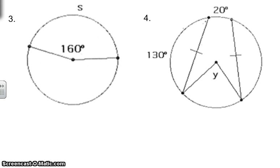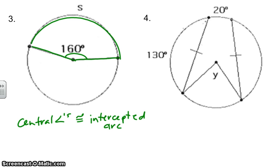Number three, we also know that central angles are congruent to intercepted arcs. So this one goes pretty fast, because if this is 160, that means the central angle is going to be the exact same thing as the intercepted arc. So S is going to equal 160 also.